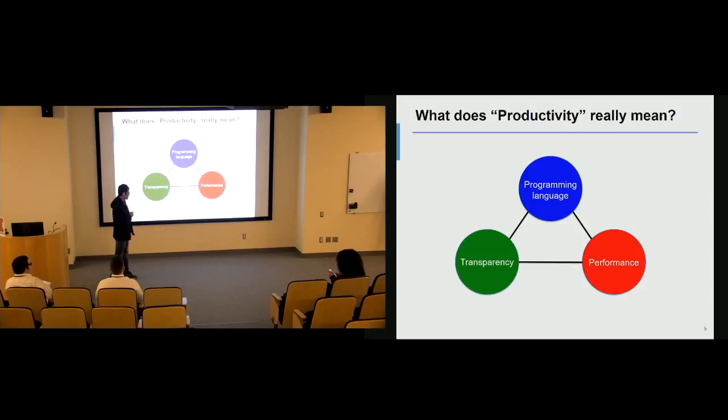The goal of this project is to strike a balance between these three things. We want to come up with a system that can deliver transparency. We want users to be able to use high-level APIs in C and C++ so they can still get very good performance, but at the same time, we want to hide all those difficult concurrency details from users.